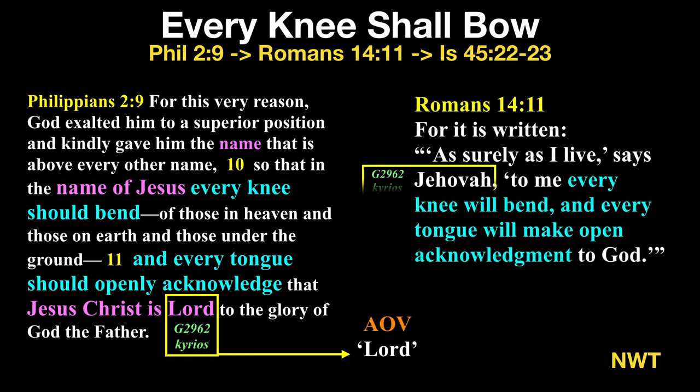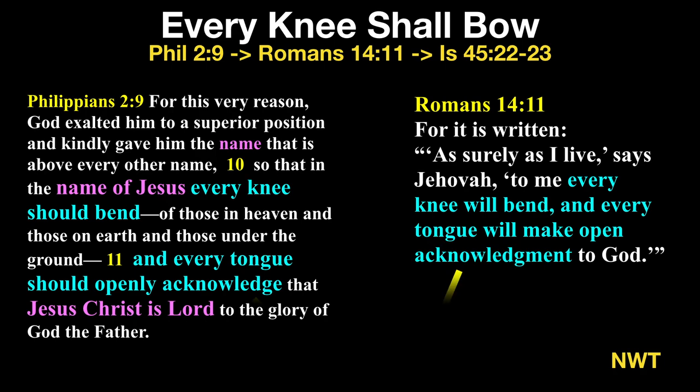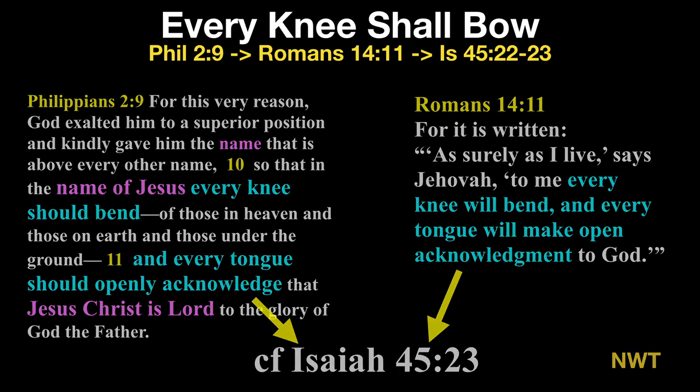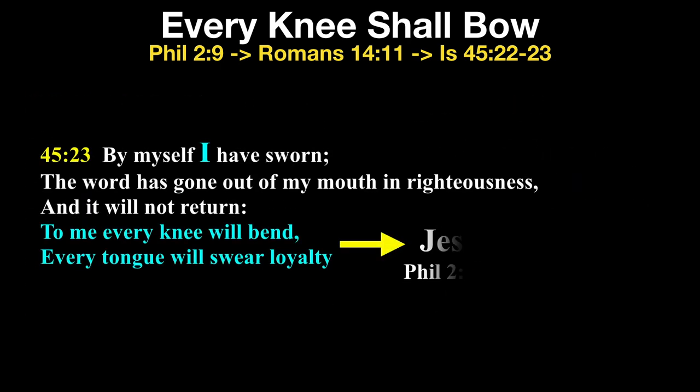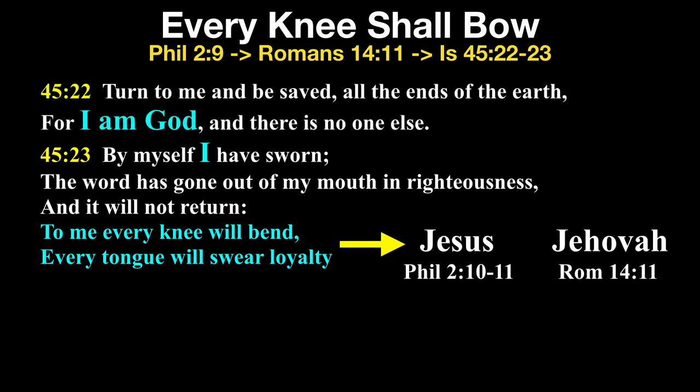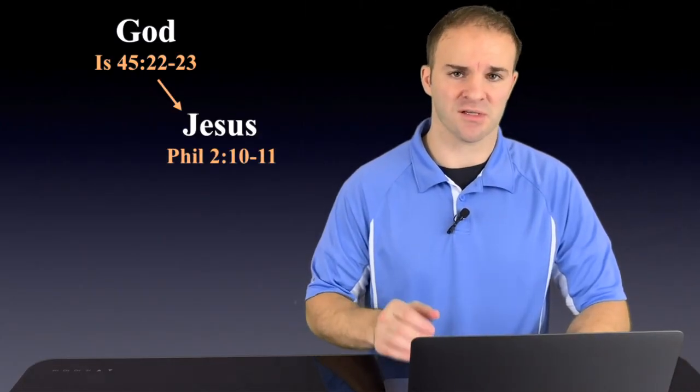But here's where the Watchtower Society gets trapped. In Romans 14:11, they translate Lord as Jehovah with the same every knee will bow and tongue confess citation. Why that is great for us is because Paul is pulling from the only place in the Old Testament that states this, Isaiah 45:23. And we see that Paul is applying 45:23 to Jesus. But if you glance your eyes up to verse 22, the person talking in this passage is God. So Paul is clearly making Jesus equal with God.